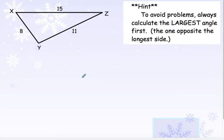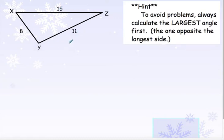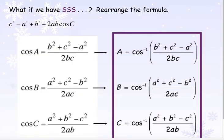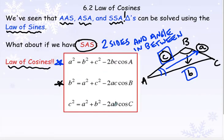Now the next kind of problem is where you're given all three sides. We have an issue because on all the problems we've done so far, we've had an angle in between two sides. Here I would have the angle between 8 and 15, or the angle between 8 and 11, or the angle between 15 and 11. I don't have any angles. So if I try to use my original formula, I would have to solve for an angle and plug in these three side lengths.